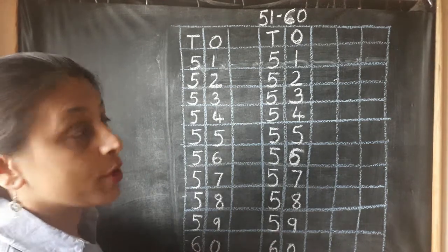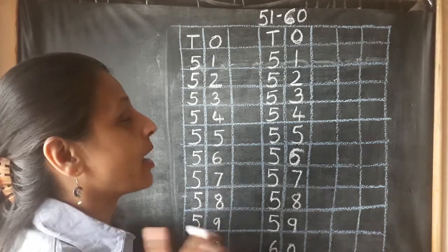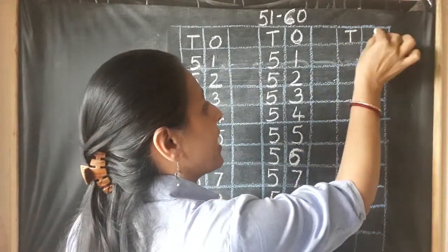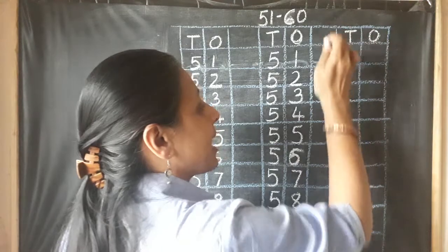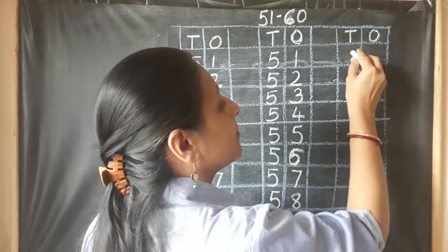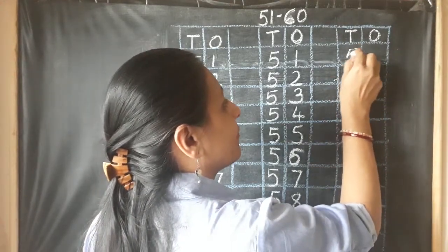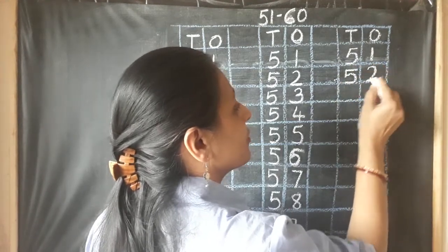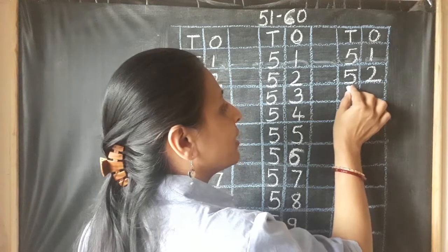Now, once more I am going to write and this time you are going to say numbers loudly. I will write numbers under T and O box. I have left one column in the middle. 5, 1, 51. 5, 2, 52. Are you saying loudly?